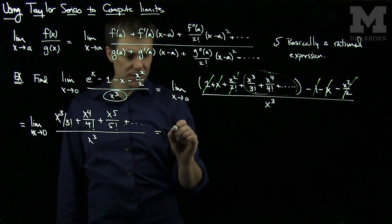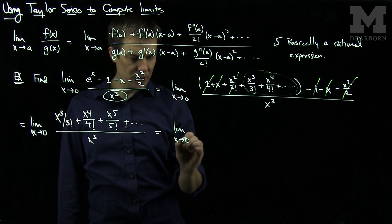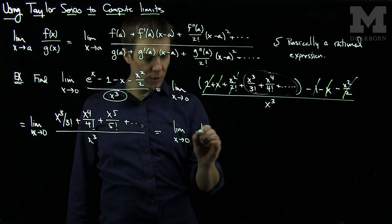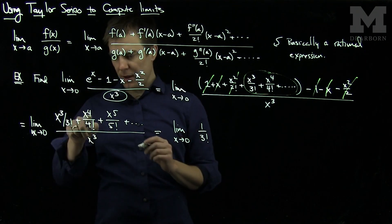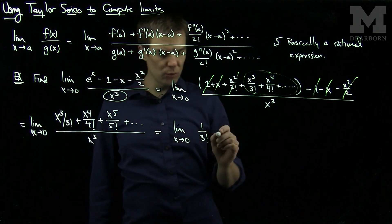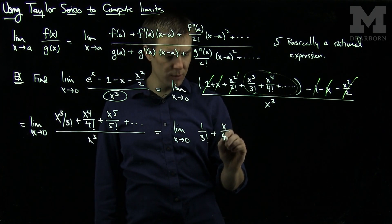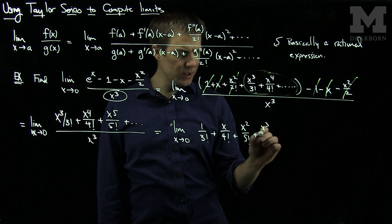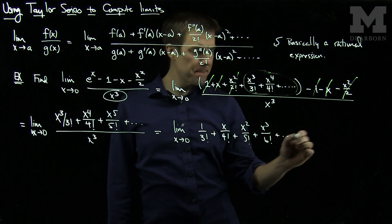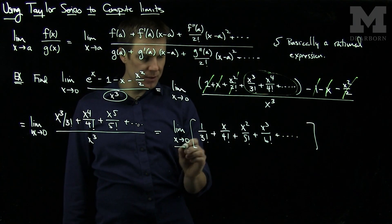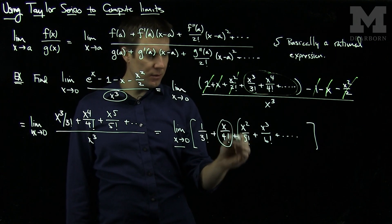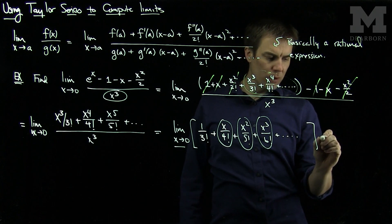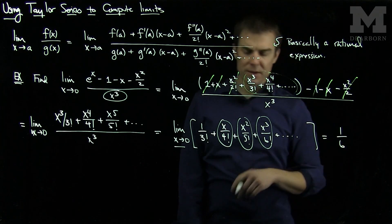Now we can simplify. This is the limit as x approaches 0. The x³ over x³ simplifies to 1/3!, and then we get + x/4! + x²/5! + x³/6! + ... When we let x go to 0, all the remaining terms go to 0, and we're just left with 1/3! = 1/6.